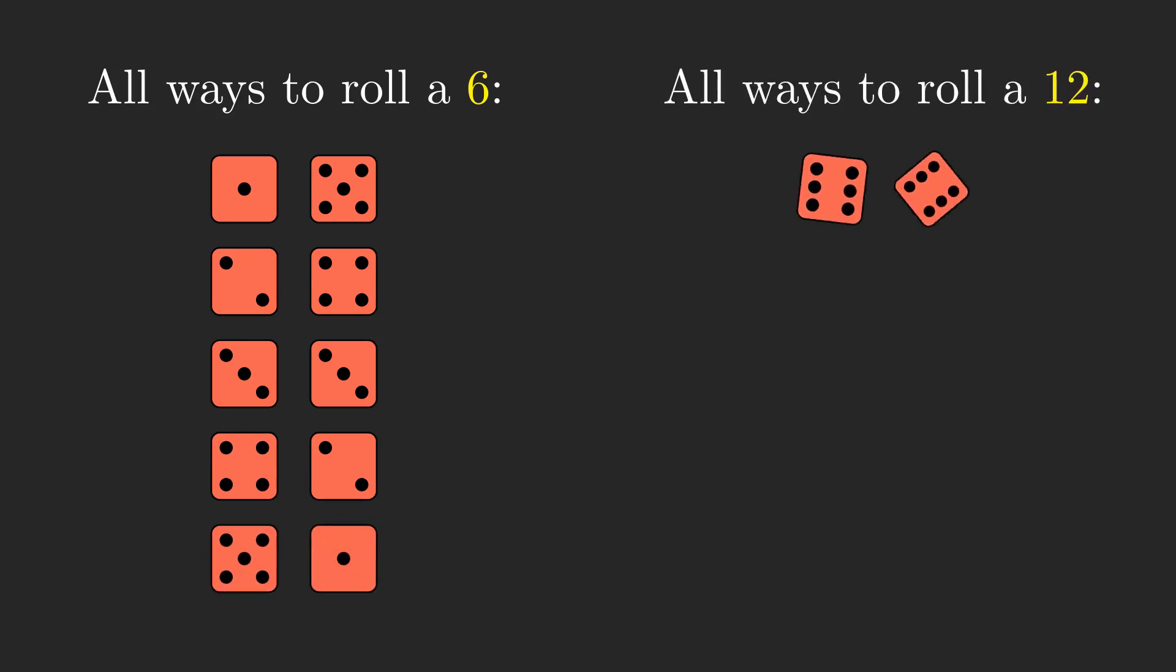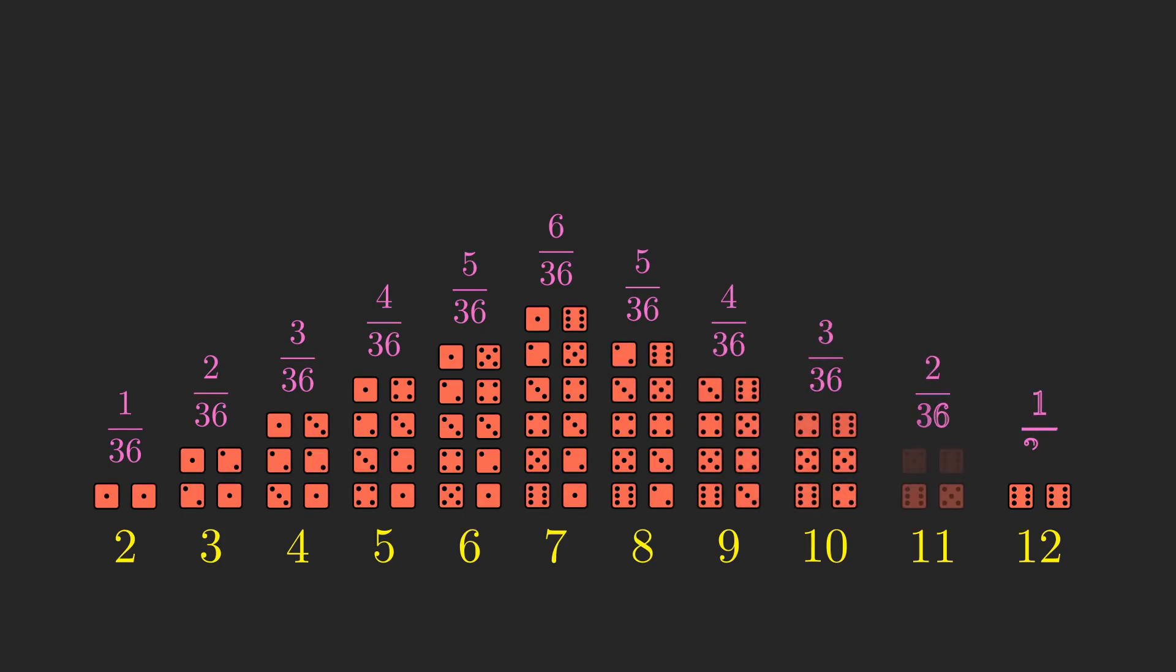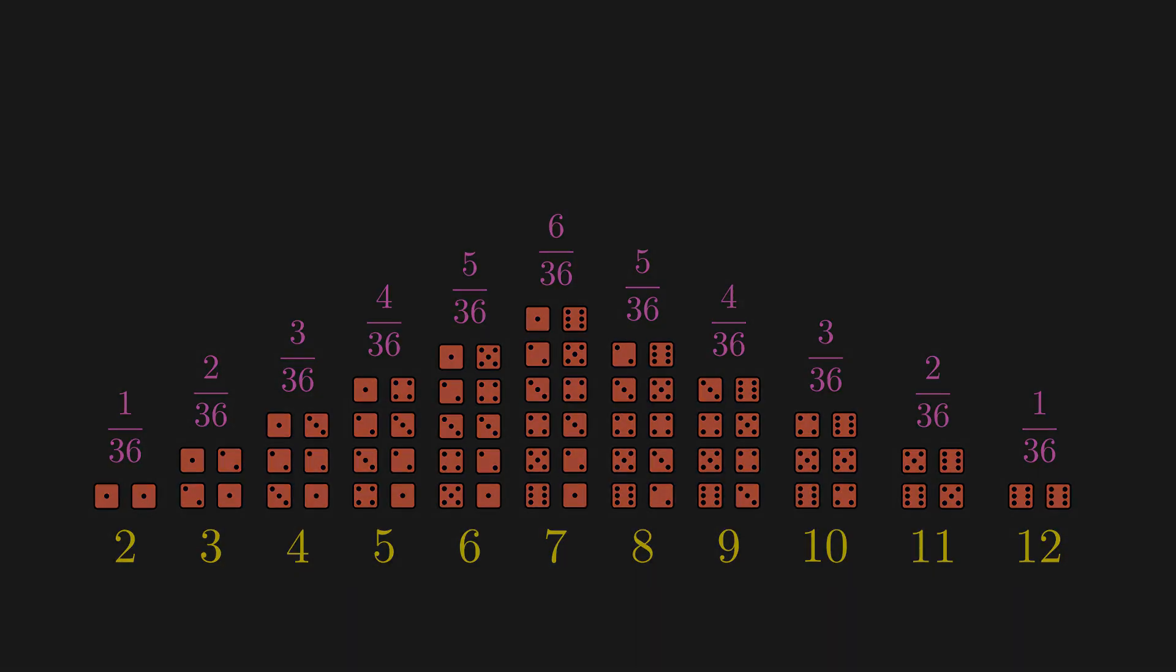We can visualize the full probability distribution of all possible outcomes with this diagram, where the column of dice pairs above each number represents all ways to roll that number. I'm sure most of you are probably familiar with this. However, I stumbled upon a very interesting question recently, and I thought I'd share it with you.